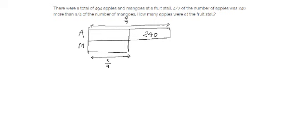I can cut the model of the apples into 4 parts, since it's 4 over 7. So if I cut it into 4 parts, what I have here is 1, 2, 3, 4 parts. And this difference is 240.